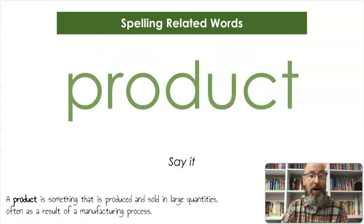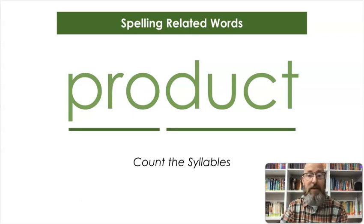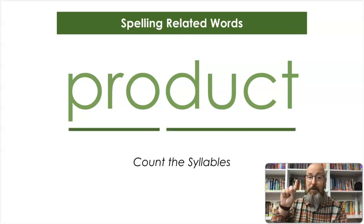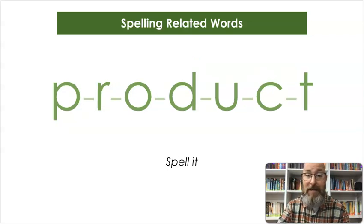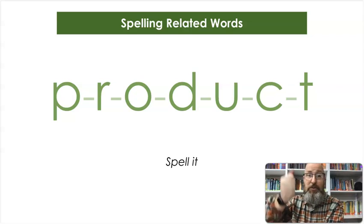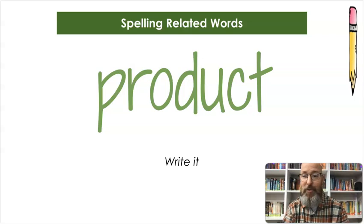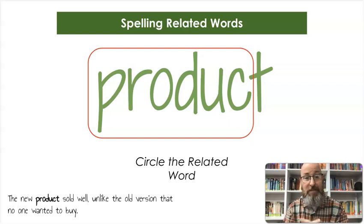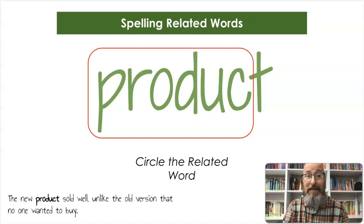The next word is product. A product is something that is produced and sold, sometimes in large quantities, often as a result of a manufacturing process. Let's count the syllables — pro-duct, product. Let's spell it: P-R-O-D-U-C-T, product. And let's write it: P-R-O-D-U-C-T. We're going to circle the beginning of that word — the related word was produce, that's the beginning part. The new product sold well, unlike the old version that no one wanted to buy. And that was our last word — thanks for sticking around until the end. Until next time, happy reading.